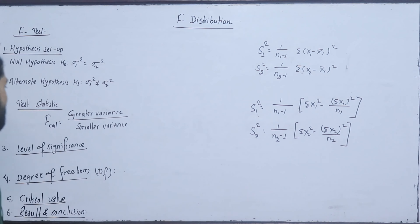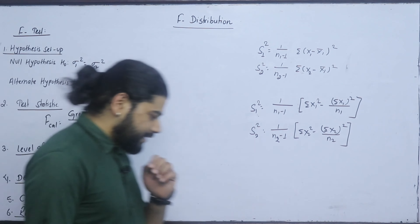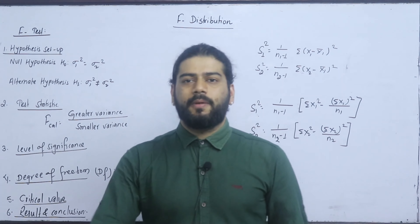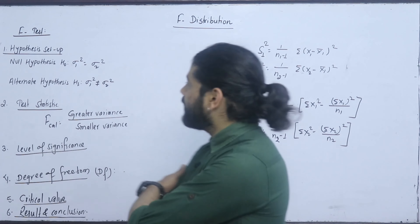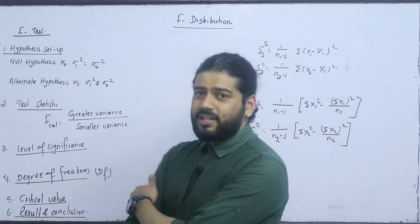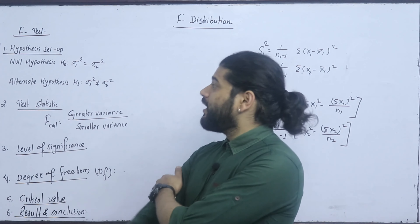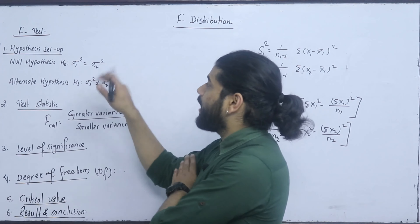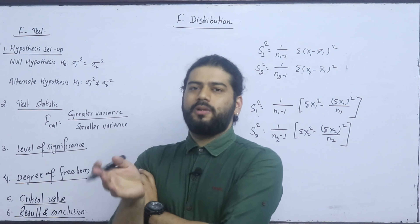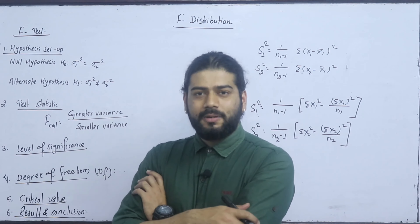Now, in the hypothesis setup, there is a null hypothesis that the first population and the second population are the same. The null hypothesis is that there is no significant difference in the variance of two populations, and the two populations have the same variance and have come from the same variance.